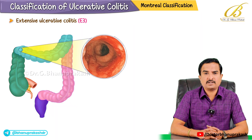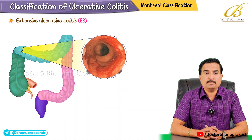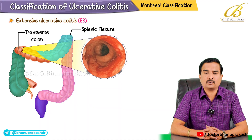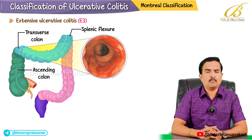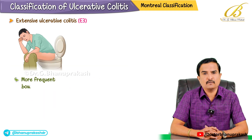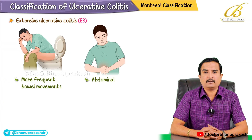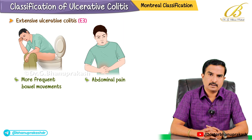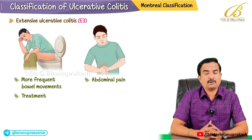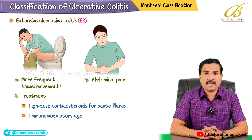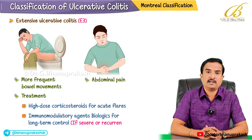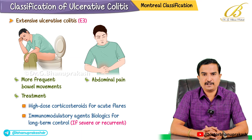The last category is extensive ulcerative colitis, called E3. In this form, inflammation goes beyond the splenic flexure and can involve the transverse colon, ascending colon, and sometimes the entire colon — that is why we call it pancolitis. Patients may exhibit more widespread symptoms including more frequent bowel movements, significant abdominal pain, and a higher risk of systemic complications. The therapeutic regimen can range from high-dose corticosteroids for acute flares to immunomodulatory agents and biologics for long-term control, especially if the disease is severe or recurrent.